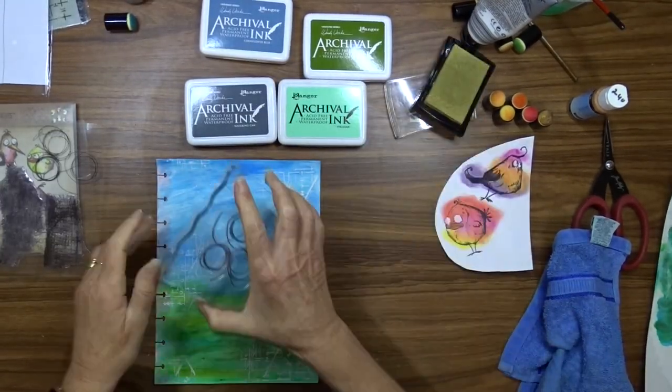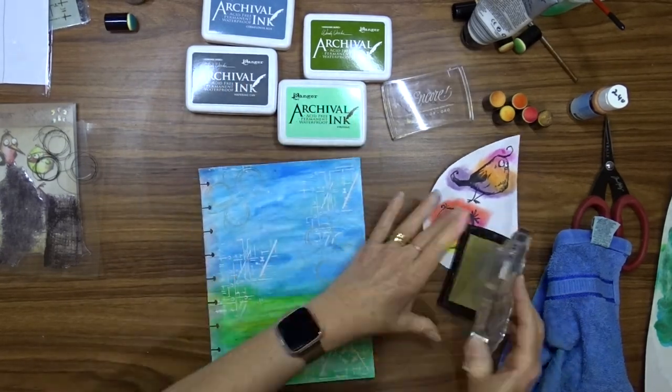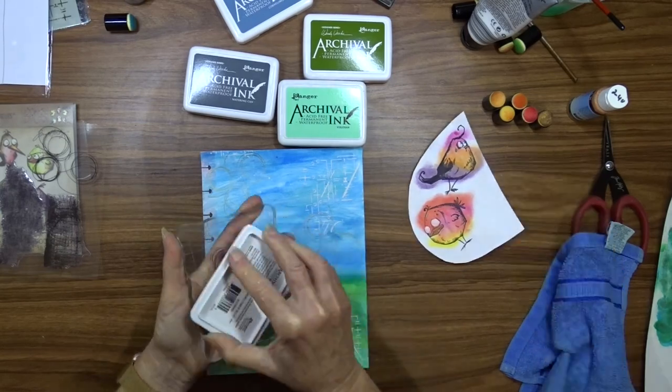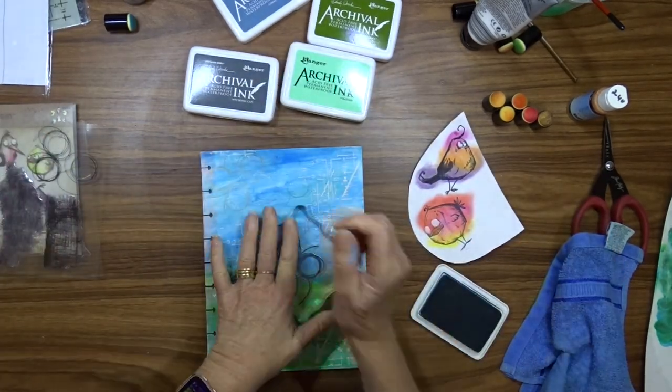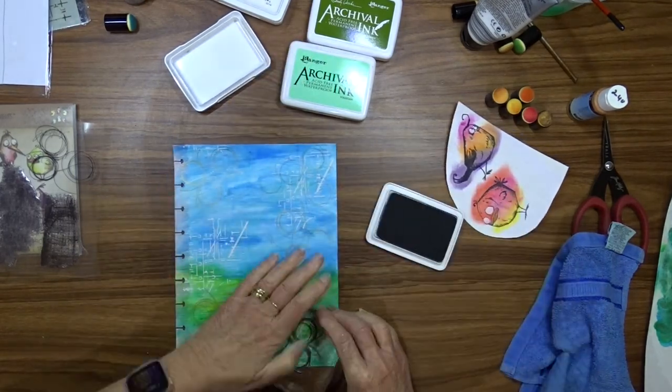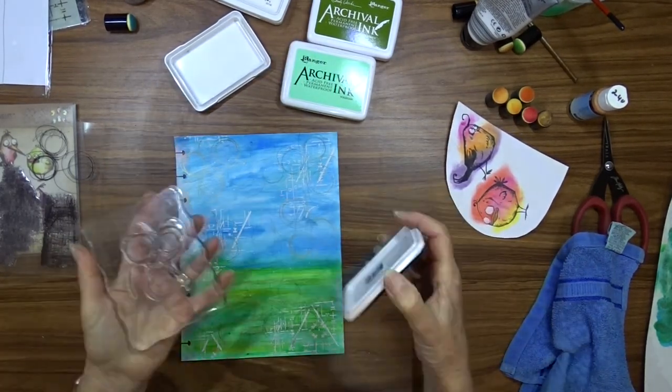Still working on the background I take this clear stamp that looks like thread and I'm going to stamp that on the background using Encore Gold ink and some archival inks that won't smudge if they get wet.